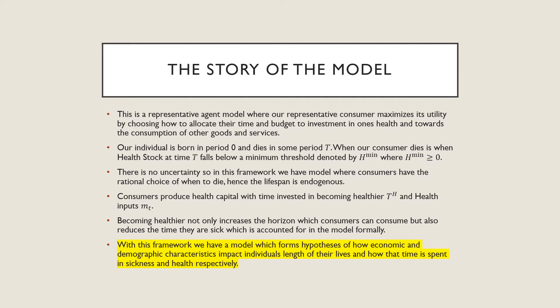There is no uncertainty in this framework, so we have a model where we have a rational choice of when to die, so the life spans in this model are endogenous. Consumers produce health capital with time invested in becoming healthier, like time invested in working out and exercising, and health inputs m, which we can refer to as medical expenditure. Becoming healthier not only increases the horizons which consumers can consume but also reduces the time that they are sick, which is accounted for in this model formally. With this framework we have a model which can form a hypothesis of how economic and demographic characteristics impact individuals' lengths of their lives and how that time is spent in sickness and health respectively.